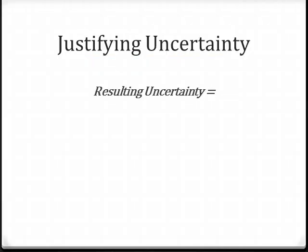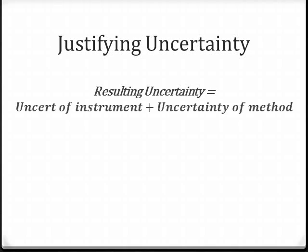Once you've determined the uncertainty based on the instrument and the uncertainty based on your method of measurement, the total uncertainty equals the instrument uncertainty plus the method uncertainty — you just add those two together. Keep in mind that sometimes, like with acceleration, the instrument uncertainty is so small compared to the method uncertainty that it doesn't make sense to add them. If that's the case, just take the biggest one. If they're about the same size, add the two together to get the resulting uncertainty.